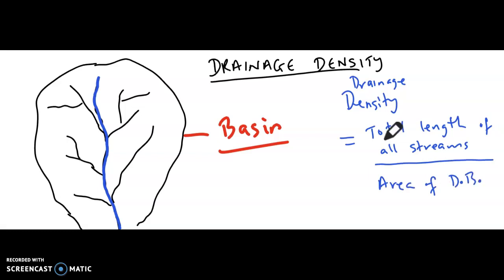That will give us a numerical value. Drainage basins are relatively large, and you must have the same units above and below — if the area is in square meters, the length must also be in meters. Drainage density equals the length of all streams divided by the area of the basin, and I want you to always remember this.